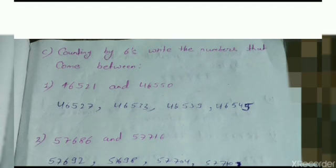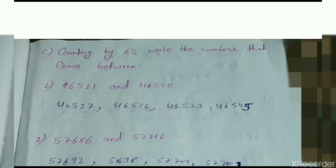Write the numbers that come between 46,521 and 46,550, counting by 6. We have to count 6 numbers each time. The first number is 46,521. The next number is 46,522.